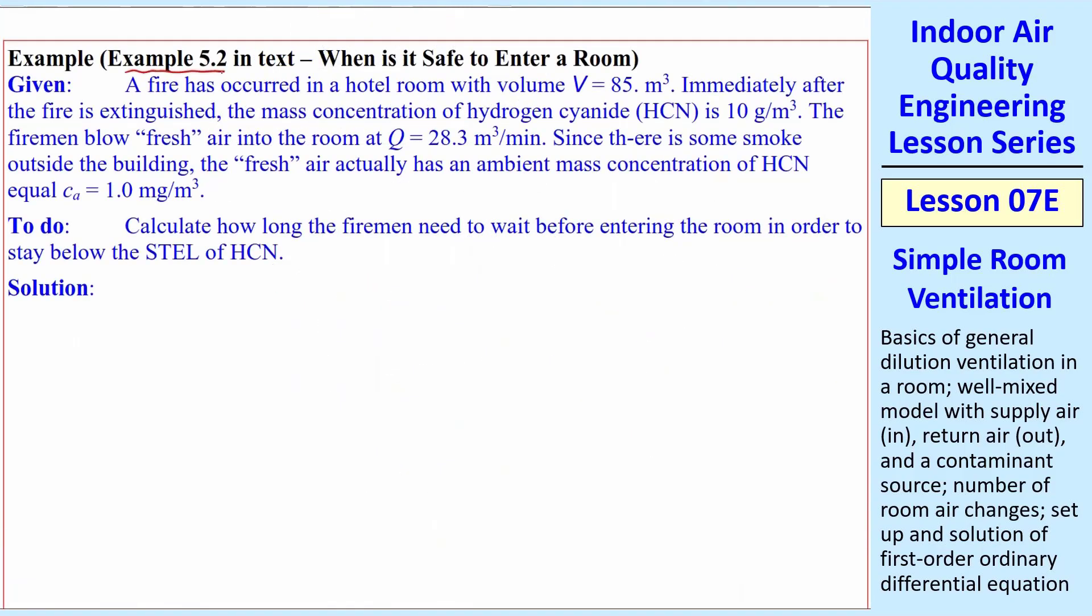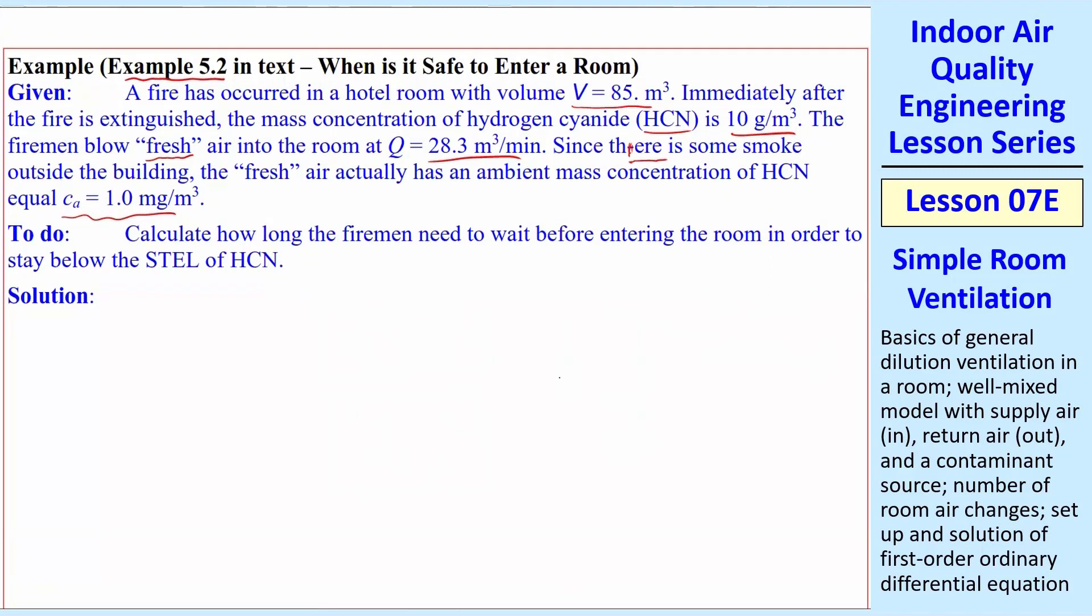Time for an example. A fire has occurred in a hotel room. Here's the volume of the room. And immediately after the fire is extinguished, we have some hydrogen cyanide, HCN, in the room. Its mass concentration is 10 gram per meter cubed. So they were burning some nasty stuff there. Firemen blow fresh air into the room at a certain volume flow rate. So this is the supply coming in. The fresh air actually has some ambient concentration, and we're going to say that's 1.0 milligram per meter cubed. But inside, it's 10 grams per meter cubed. Calculate how long the firemen need to wait before entering the room in order to stay below the STEL. Short-term exposure limit is appropriate because you don't have the firefighters fighting that fire for eight hours a day, 40 days a week. The firemen will probably be in the room no more than 15 minutes. Remember, this STEL is based on 15 minutes. The STEL is equal to 5 milligram per meter cubed. That means that a fireman can tolerate that for 15 minutes at 5 milligram per meter cubed.